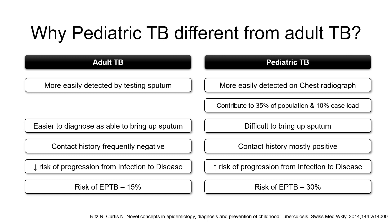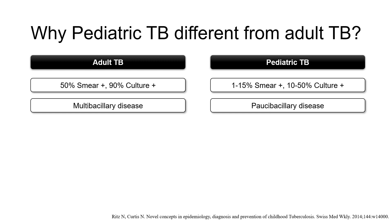The risk of progression from infection to disease is very high in pediatric patients. If an adult gets exposed to tubercle bacilli for the first time, there is a very low chance of developing disease, but that is not so for pediatric patients. The risk of extra-pulmonary tuberculosis is 15% in adult patients but 30% in pediatric patients. In pediatric patients, only 1 to 15% are smear positive and 10 to 50% are culture positive, whereas in adults smear positivity is almost 50% and culture positivity almost 90%. Pediatric TB is paucibacillary, meaning the bacillary load is less.